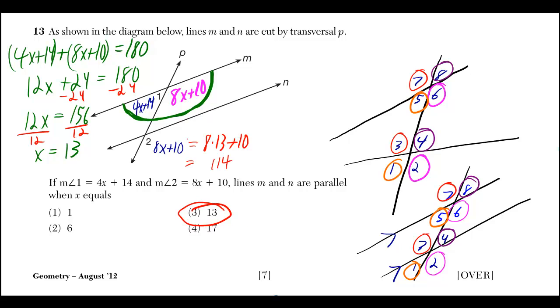By the way though, 8 times 13 plus 10 gives you 114. So when I said let this pink angle up there be 8x plus 10 as well, I was forcing it to also be 114 degrees. So if I made both of those angles equal, then the lines are parallel.